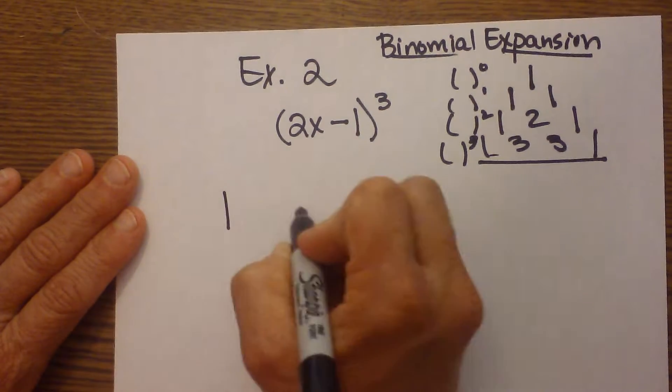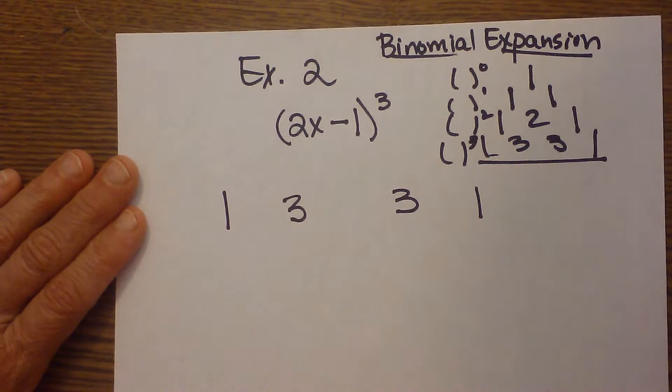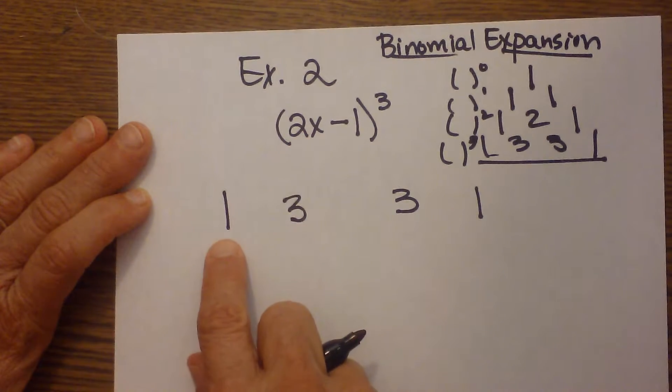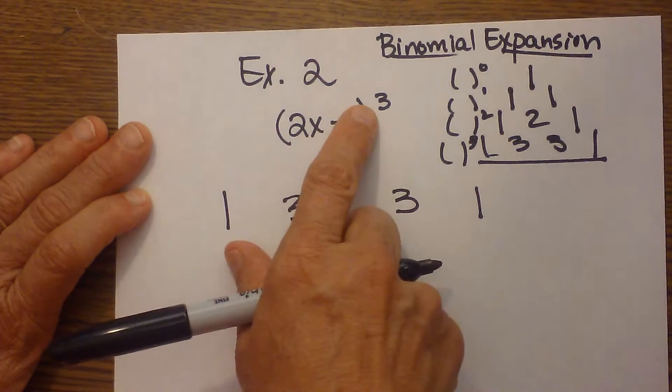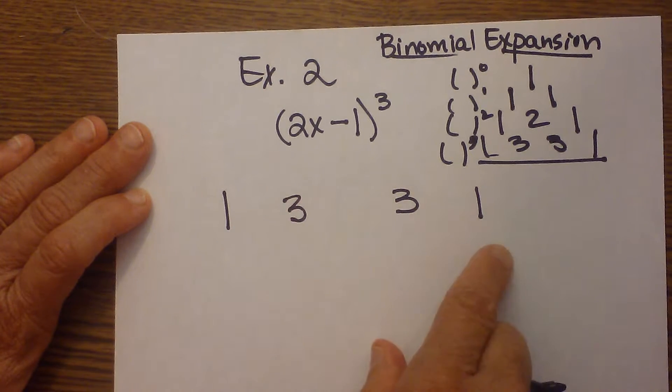So my coefficients are going to be 1, 3, 3, and 1. Now let's figure out what our terms are. I'm going to take the first term, and I'm going to start here, and raise it to the third power, and then raise it to the second power, and then first power, and the zero power.